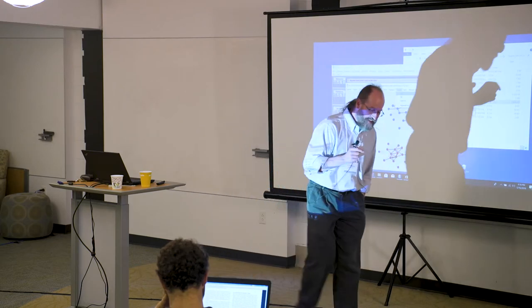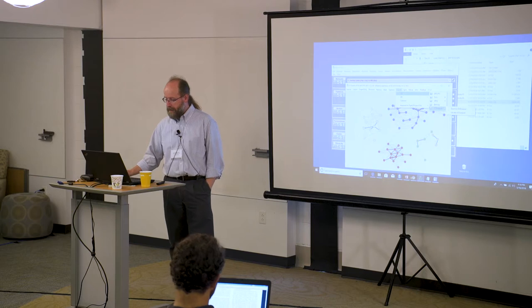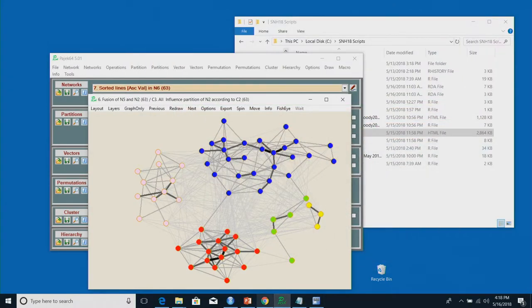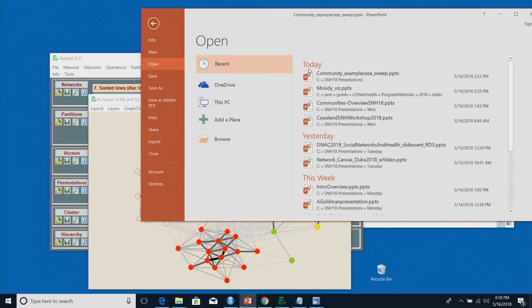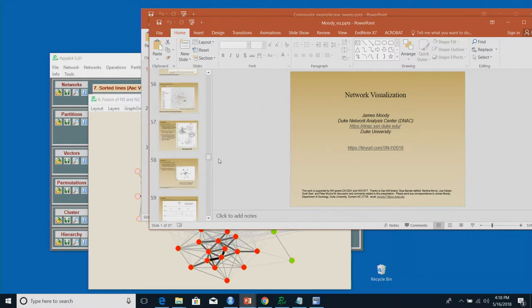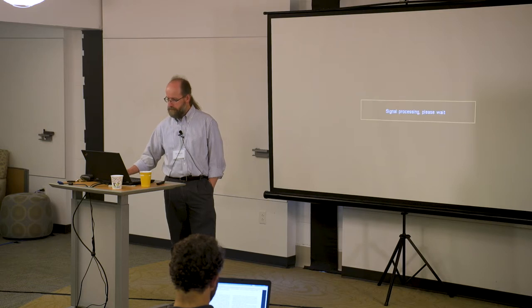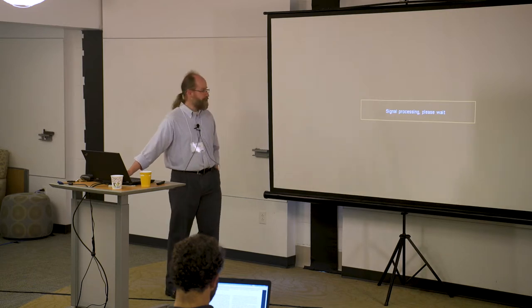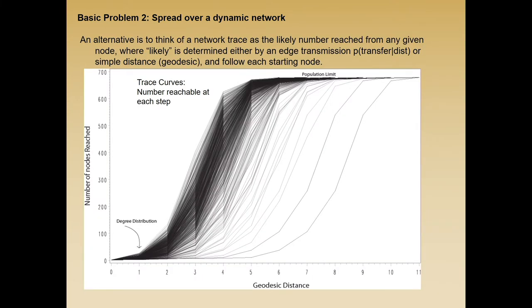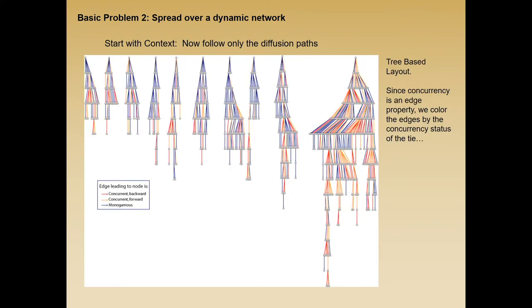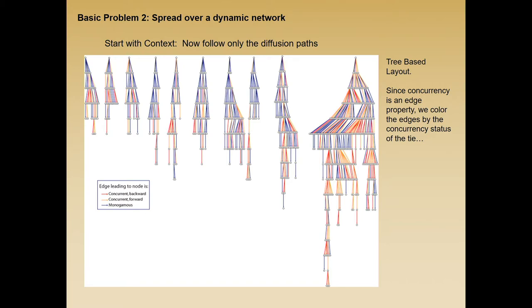Regarding visualizing diffusion in networks — our strategy has typically been to plot diffusion trees. The classic way shows the proportion of the population infected at any given time step, giving classic sinusoidal curves from simulation. Coloring the network doesn't work so well because people can't see it. We've found the most effective way to visualize diffusion in a closed network is to identify seeds and follow the spread down as a tree.